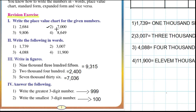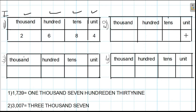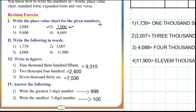Second question: seven thousand. Here we have zero units, zero tens, zero hundreds, and seven thousands — it becomes seven thousand. Third question: nine thousand eight hundred and six.